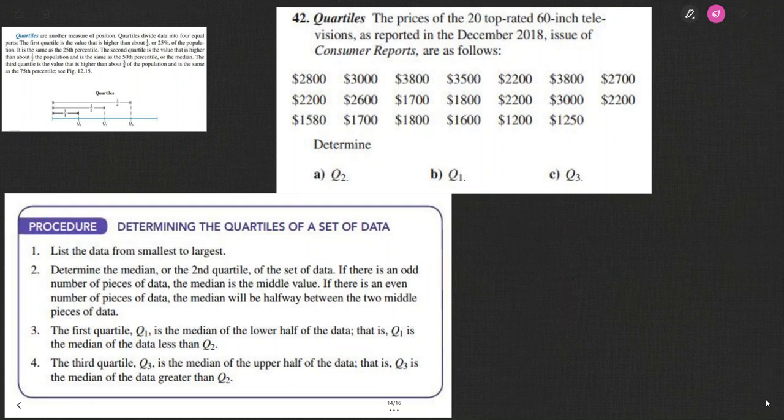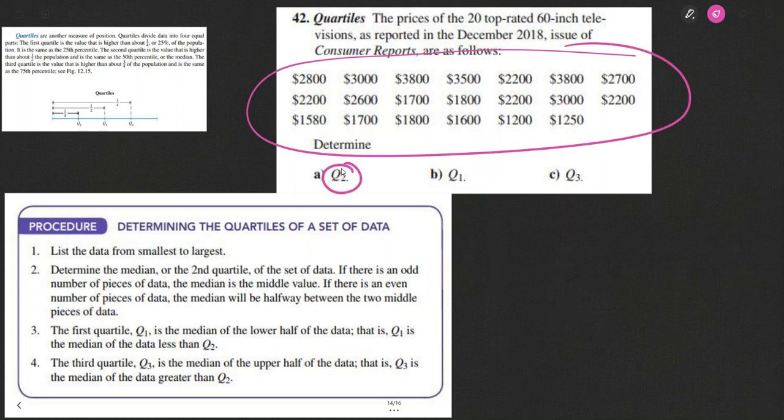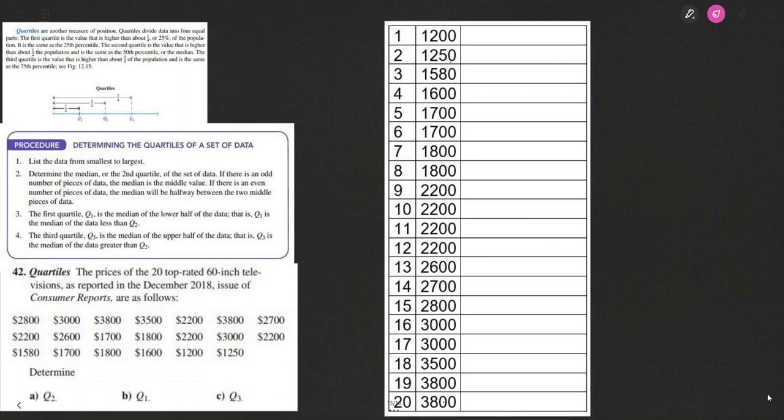Once we put the data in order—so if we had these 20 pieces of data, once we put them in order, quartile two is going to be the median. Very hard to tell the median by looking at these numbers as they are. So I'm going to put them in order from the smallest, so that's the first one, up to the biggest, that's the number 20. First step: determine—or the first step is putting them in order, and then the second step is finding the quartile two, and that's the median.